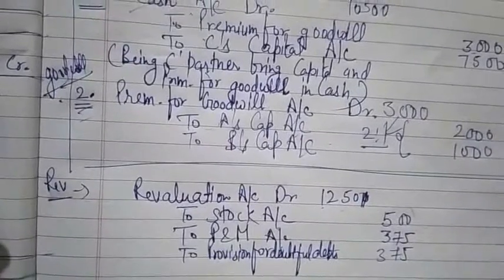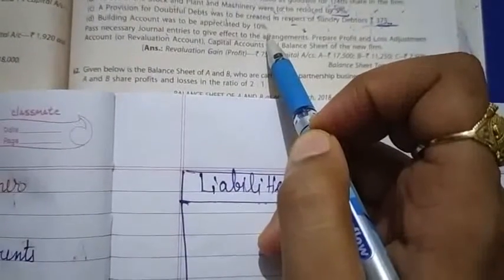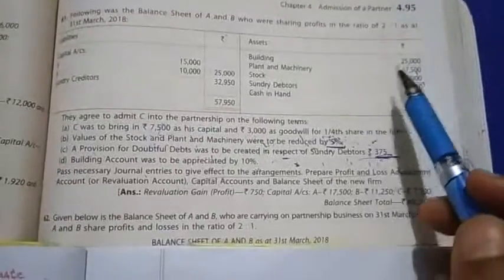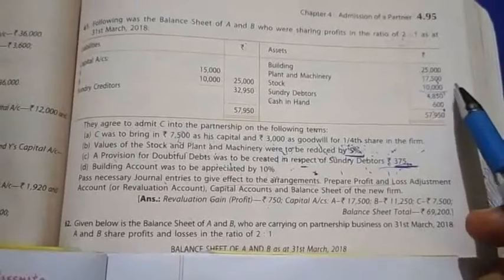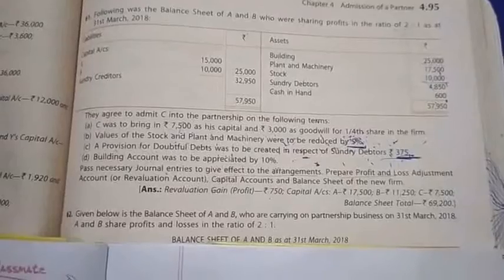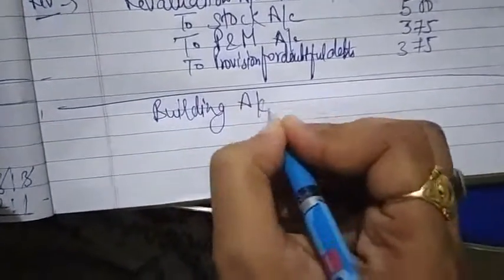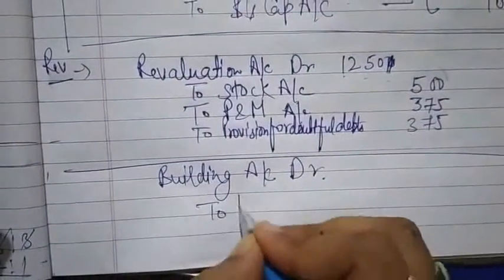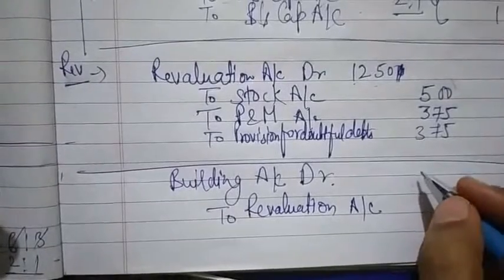Now the second entry: building account was to be appreciated by 10%. Building amount given is ₹25,000. 10% of ₹25,000 = ₹2,500. Since building is increasing, entry is: Building account debit to Revaluation account — ₹2,500. This goes to the credit side of the revaluation account.